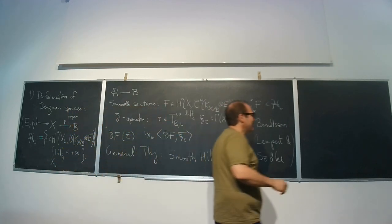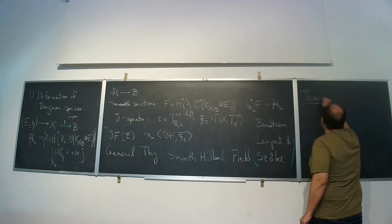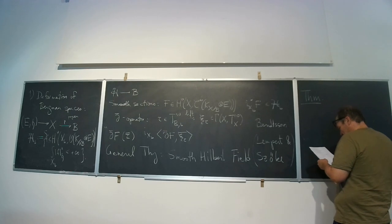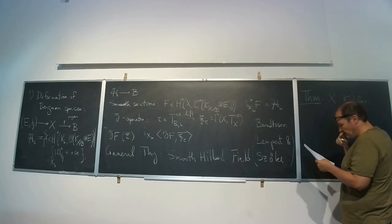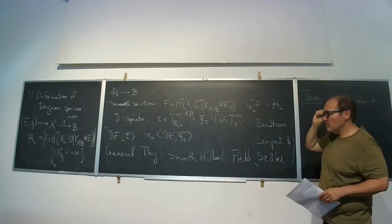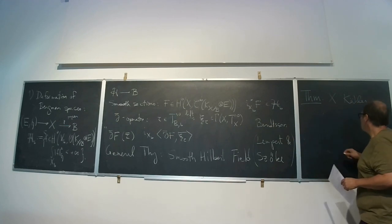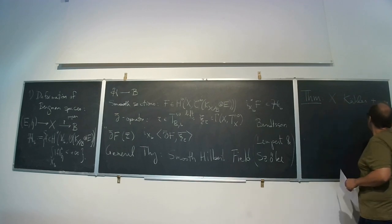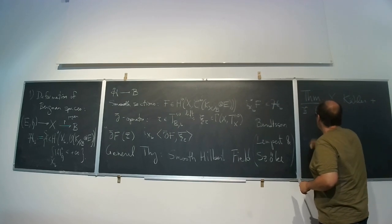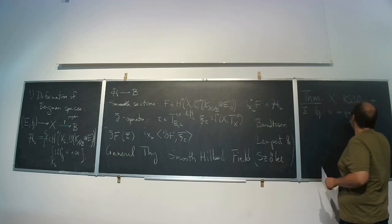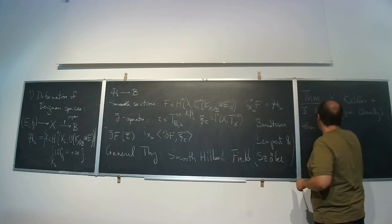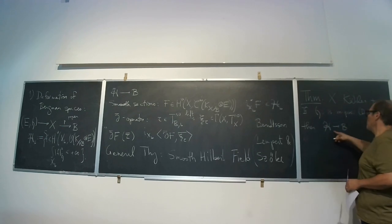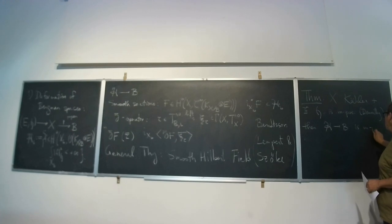But my goal is to consider this non-locally-trivial case and still try to prove some theorem about it. So let me state the theorem. Suppose that X is Kähler and everything else I said — the submersion is proper — and you have some smooth metric. The conclusion of the theorem is: if the metric h is m-positive in the sense of Nakano, then this direct image with its L2 metric is also m-positive.